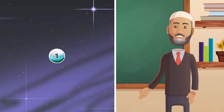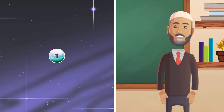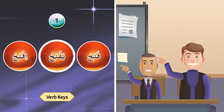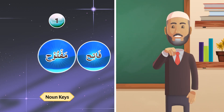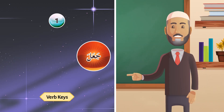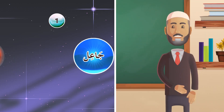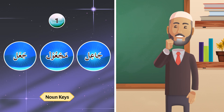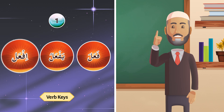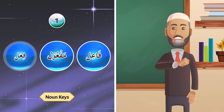Let us take the first style and take three verbs on that style. Repeat after me: fataha yaftahu iftah — fataha yaftahu iftah. Jahala yajhalu ijhal — jahala yajhalu ijhal. Jahil, majhool, jahl. Fa'ala yaf'al if'al — fa'al, maf'ool, fi'l.